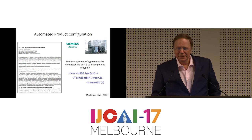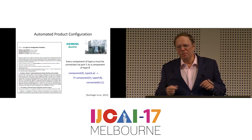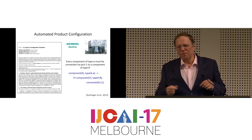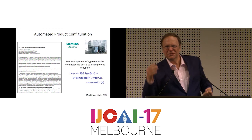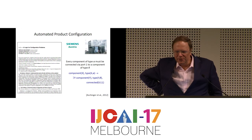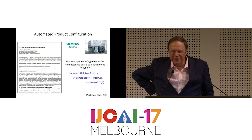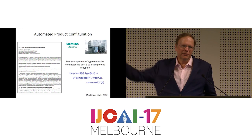Here is another interesting application from a big project with Siemens Austria, which has an innovative center for product configuration — probably the most innovative world center for product configuration. If you configure products, you have constraints and want to check whether there's a realization. For example: every component of type alpha must be connected via part-1 to a component of type beta. This is written as: component(X), type(X, alpha) ⊃ ∃Y: component(Y), type(Y, beta), connected(X, Y). This kind of constraint requires an existential quantifier.